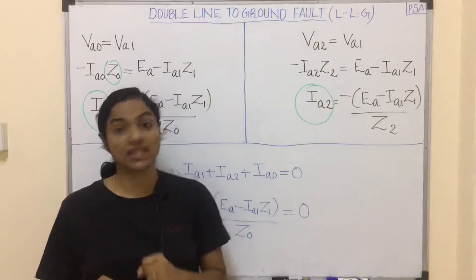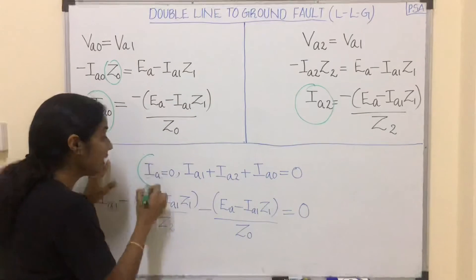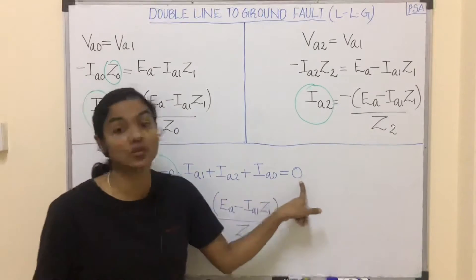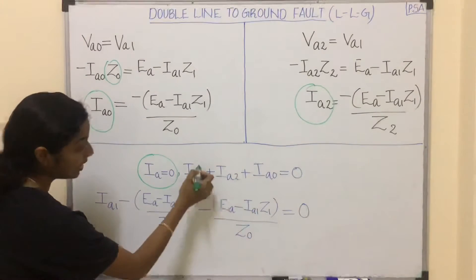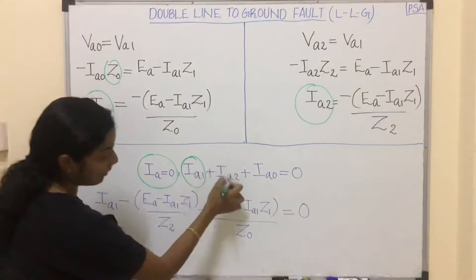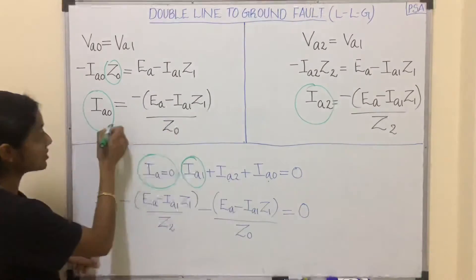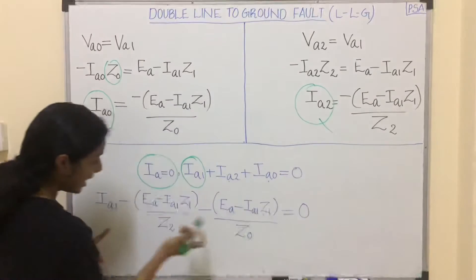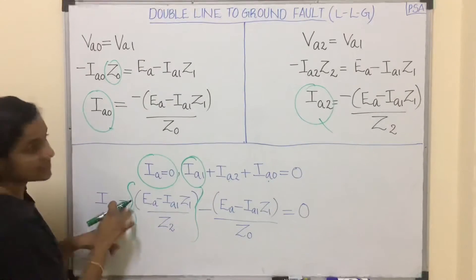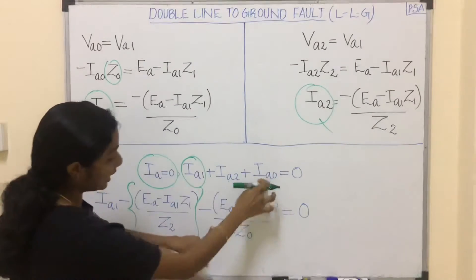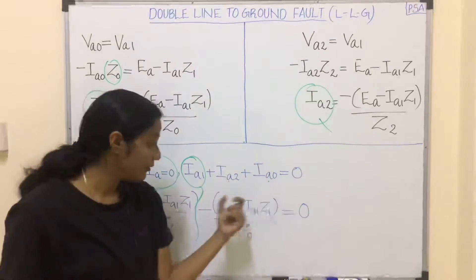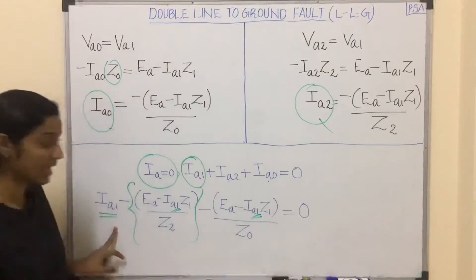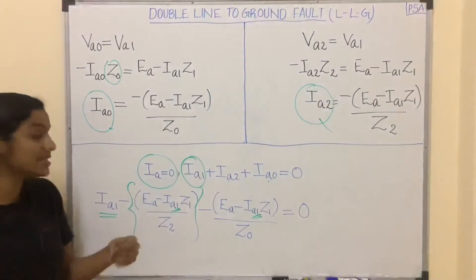The remaining boundary condition is IA equal to zero. We know IA equals Ia1 plus Ia2 plus Ia0, which equals zero. Substituting the expressions we derived for Ia2 and Ia0 into this equation, we see that only Ia1 terms remain, so by simplifying this equation we can get a relation for Ia1.